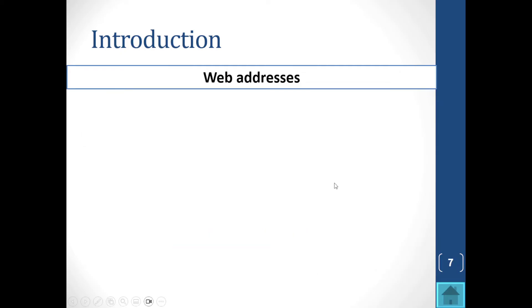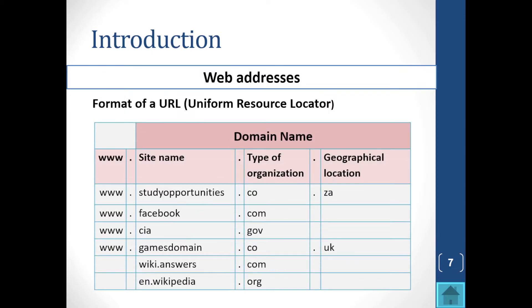Web addresses — the format of a URL, or Uniform Resource Locator, is as follows: the whole section deals with the domain name. We have www, which is a service that runs on the internet, then the site name, then the type of organization, and the geographical location. For example, 'studyopportunities.co.za' — the site name, type of organization, and it's a company located in South Africa.